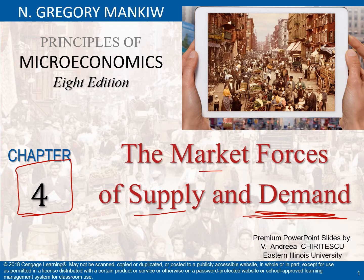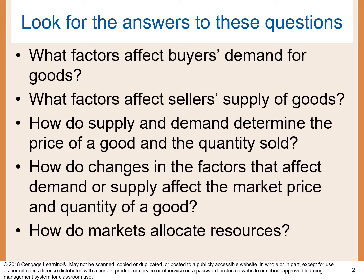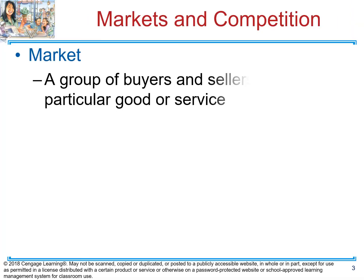This is what we're going to study in this chapter: the market forces of supply and demand. We're going to talk about what factors affect buyers' demand for goods and services, why sellers supply a product on the market, the difference between demand and quantity demanded, how to shift the curve, different types of equilibrium, and new equilibrium on the market.